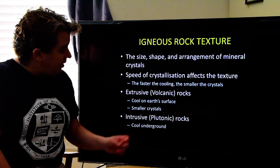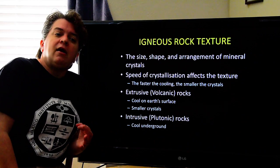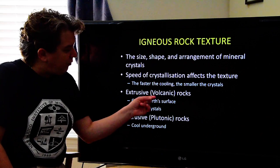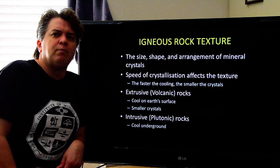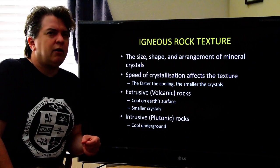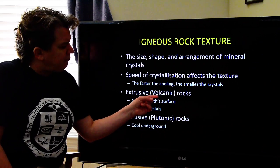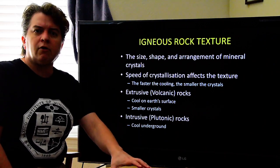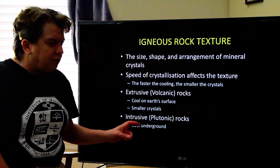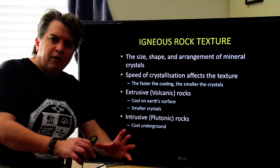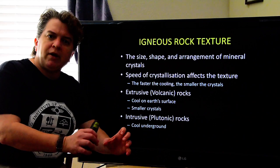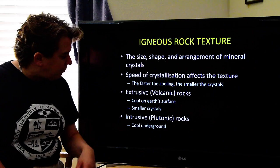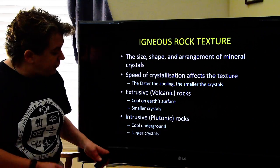Then we have the intrusive or plutonic rocks. The term 'plutonic' and 'volcanic' come from Roman mythology — Vulcan was the god of the forge and fire, and Pluto was the god of the underworld. Since intrusive rocks are igneous rocks that cool and become solid underground, they get the term 'plutonic.' They cool underground, so they cool slower.